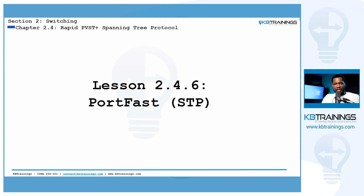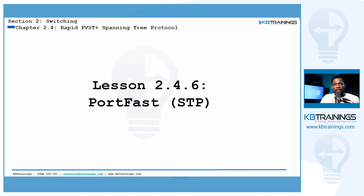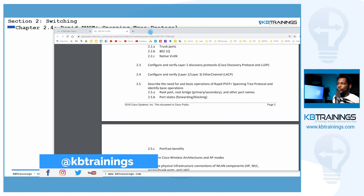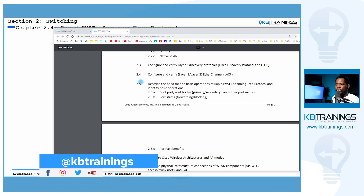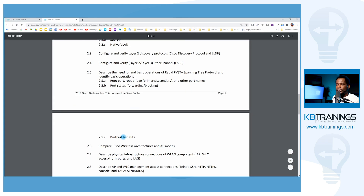Hey, what's up guys, this is GI here with KB Trainings. Welcome to lesson 2.4.6 for our course on the Cisco CCNA 200-301. We are still learning Spanning Tree Protocol, and today we are talking about PortFast. PortFast is a feature of Spanning Tree Protocol that Cisco requires us to know — under 2.5C on the exam blueprint, Cisco is asking us to know the PortFast benefits.